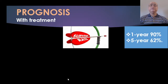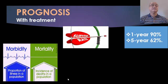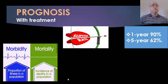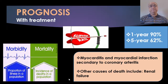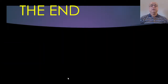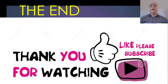Prognosis with treatment: at one year the survival rate is more than 90%, while at five years the survival rate is 62%. Morbidity is proportional to illness in a population and mortality is the incidence of death in a population. Causes of death may include myocarditis and myocardial infarction secondary to coronary arteritis, as well as renal failure. Thank you very much for watching and please don't forget to subscribe to the channel.